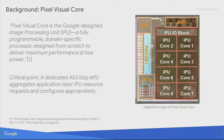A bit of background: Google's Pixel 2 mobile phone has a Pixel Visual Core in it. The Pixel Visual Core is a Google-designed image processing unit — a fully programmable domain-specific processor designed from scratch to deliver maximum performance at low power. You can see the Pixel Visual Core here with the eight IPU cores and some surrounding IP, and in particular the A53.